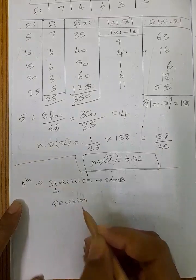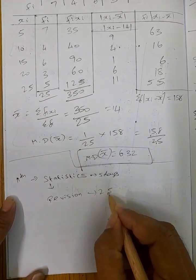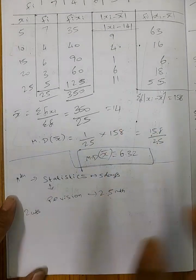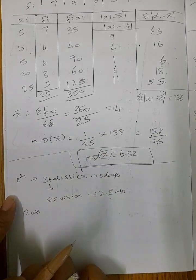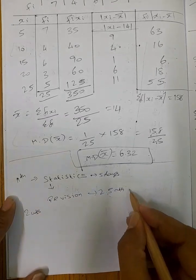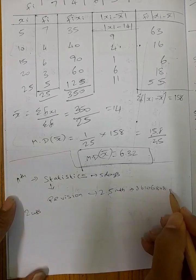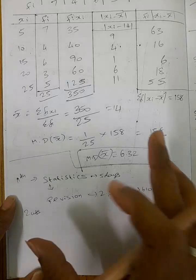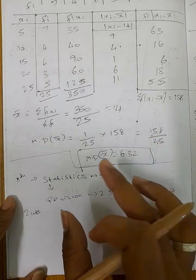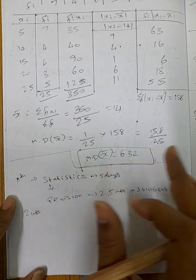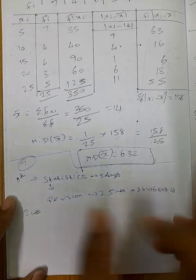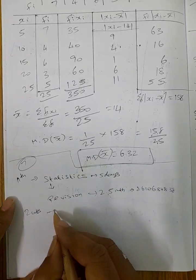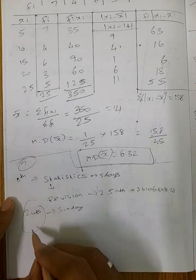After 1–2 weeks you will have a revision batch. In this revision batch, all units will be revised again in the next 2 and a half months. This revision batch is very useful. Interested students call 86-10-68-48-38. This revision batch is a total of 6 weeks.